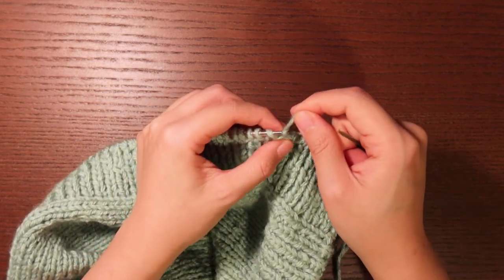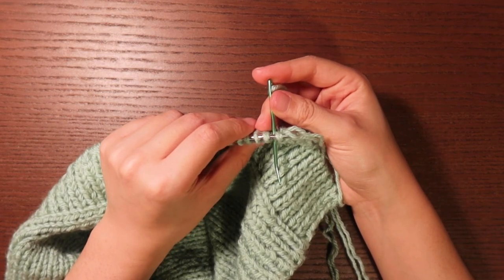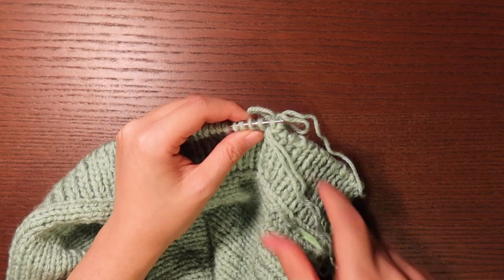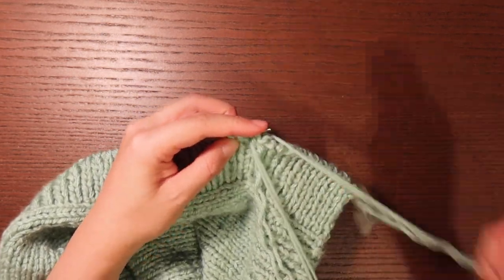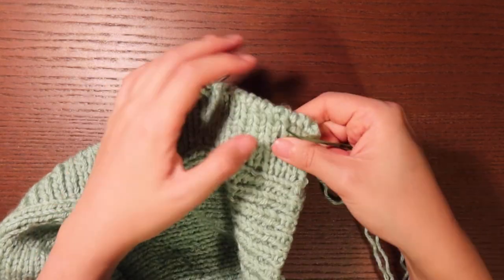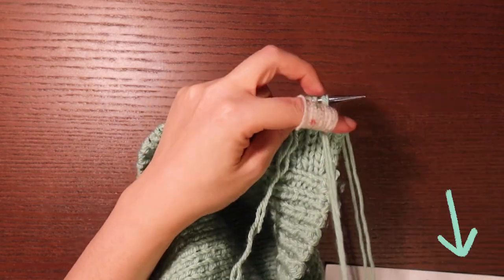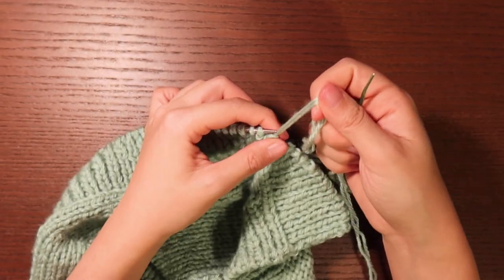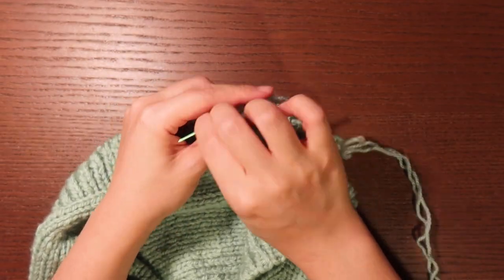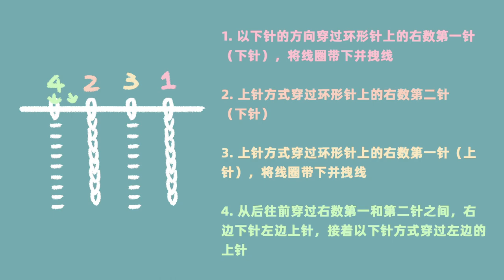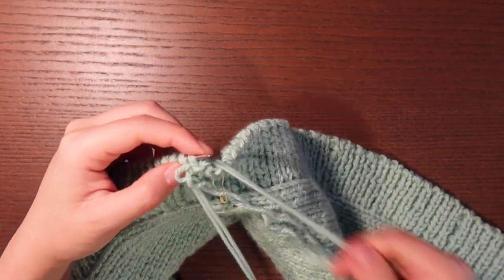The tubular bind-off looks complicated. First, leave a yarn tail about 3–4 times the total length, cut, and thread onto a tapestry needle. The sequence: pass through the first knit stitch knitwise and drop it off; pass through the second knit stitch purlwise but don't drop; pass through the first purl stitch purlwise and drop it; then from between stitches 1 and 2, insert the needle from back to front, and pass through the second stitch's purl loop knitwise. That completes one repeat. It sounds very confusing — even recording this voiceover, I found it very tongue-twisting. I kept a handwritten note beside me while filming, and after about three repeats it became muscle memory.